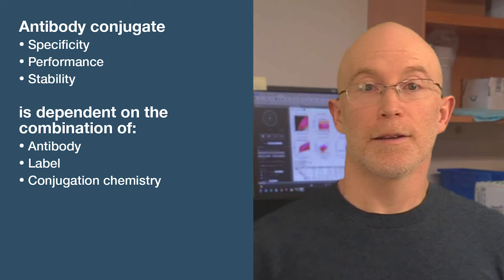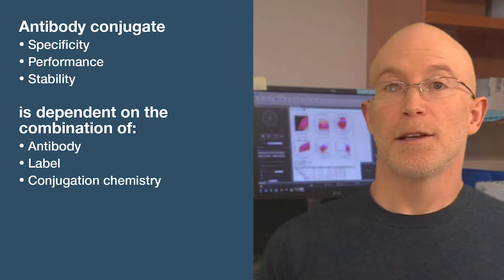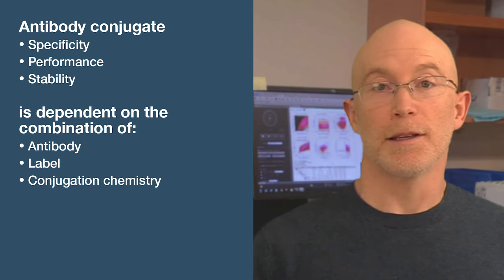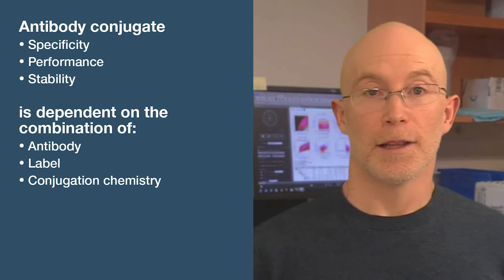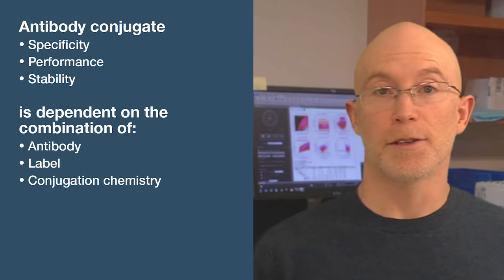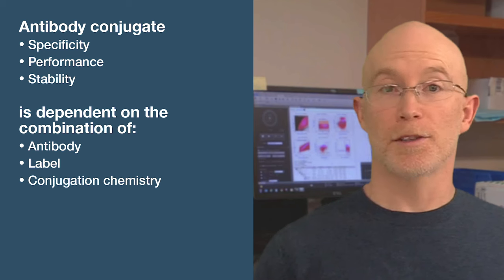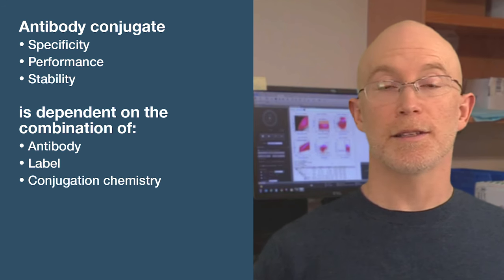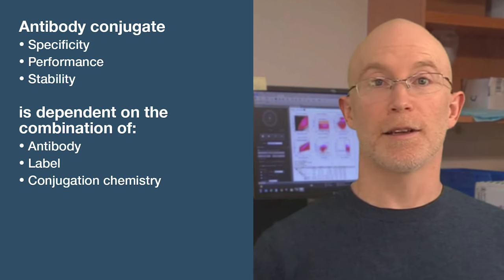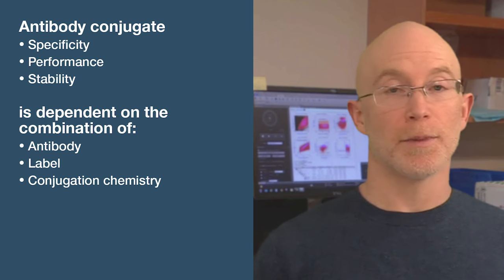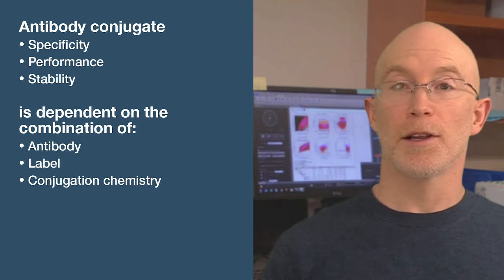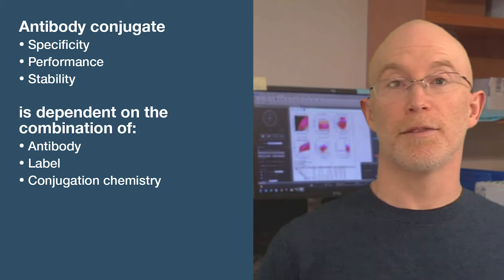There's also the potential for increased off-target binding and lower stability. The impact on specificity, performance, and stability is highly dependent on the antibody, the label, and the conjugation chemistry. That's why it's important to scrutinize the conjugates on your list to look for validation testing performed in the assay or application you'll be using, and not rely solely on data from the unconjugated version of the antibody.